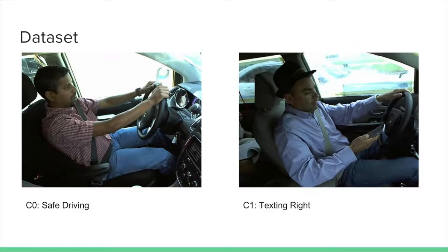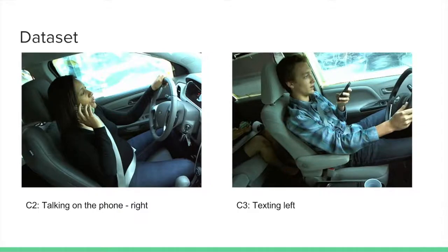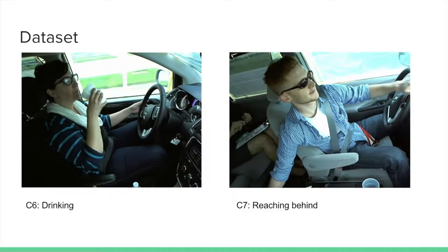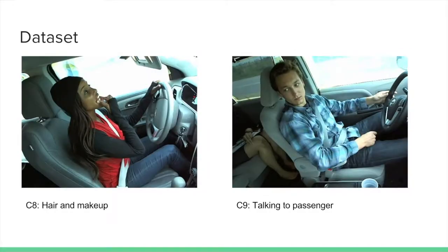Let's have a closer look into our dataset. On the left is class 0, where the drivers are safe driving. On the right is class 1, where the driver is texting using the right hand. In class 2, the driver is talking on the phone with the right hand. In class 3, the driver is texting using the left hand. Class 4 shows drivers talking on the phone using the left hand. Class 5 shows drivers operating the radio. Class 6 shows drivers drinking. Class 7 shows drivers reaching behind the back seat. Class 8 shows the driver touching hair or doing makeup. Class 9 shows the driver talking to passengers next to them or in the back seat.